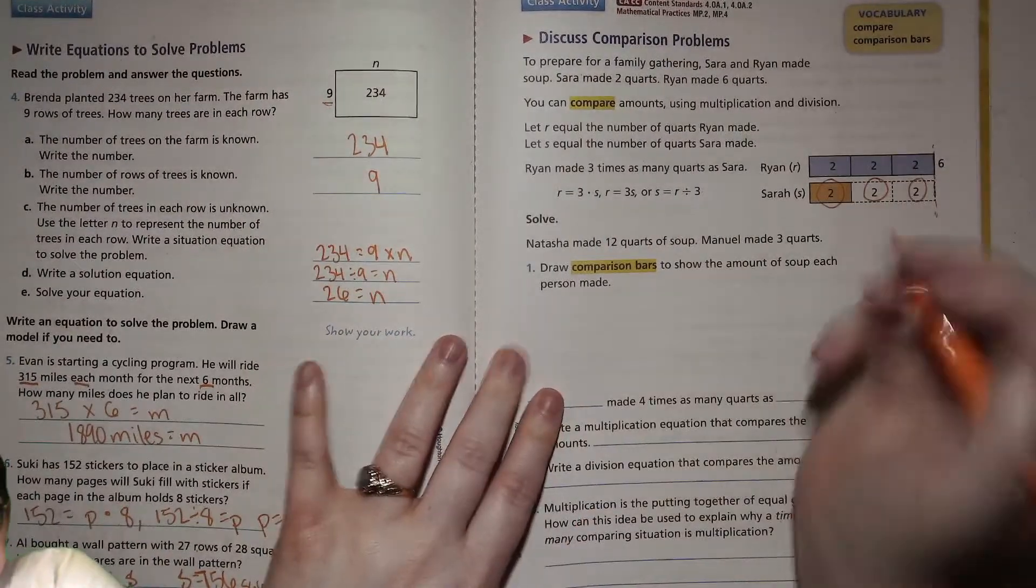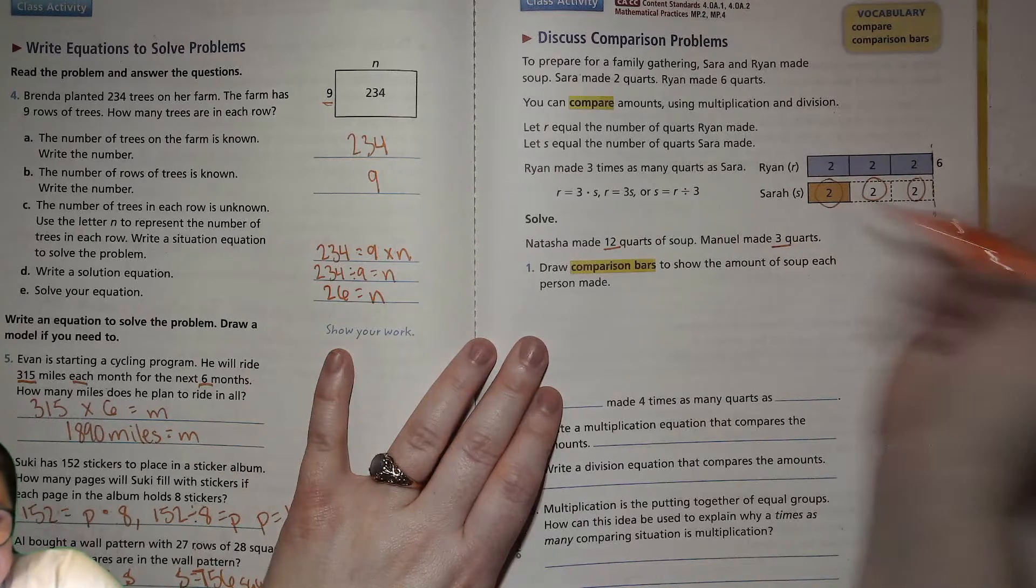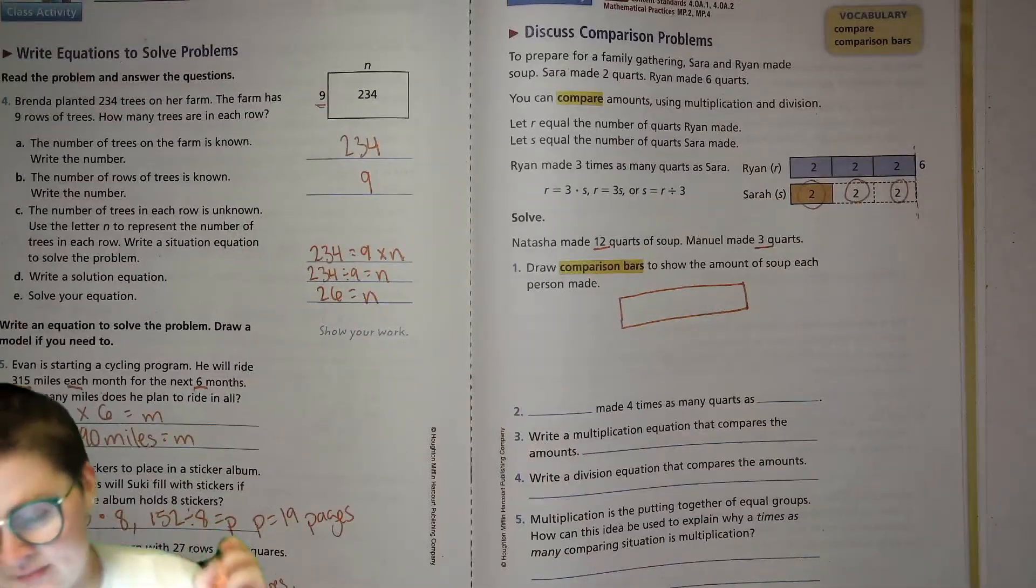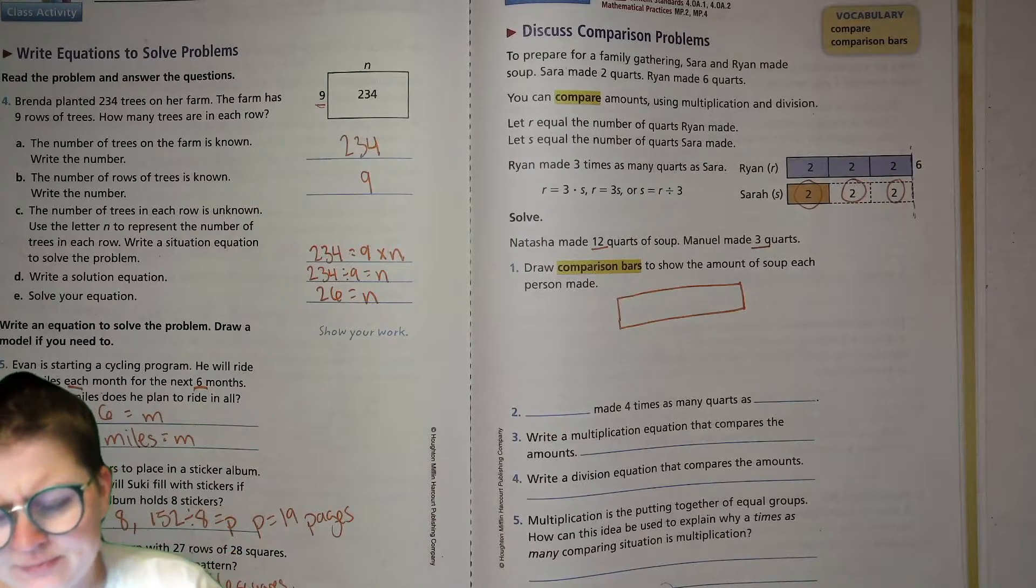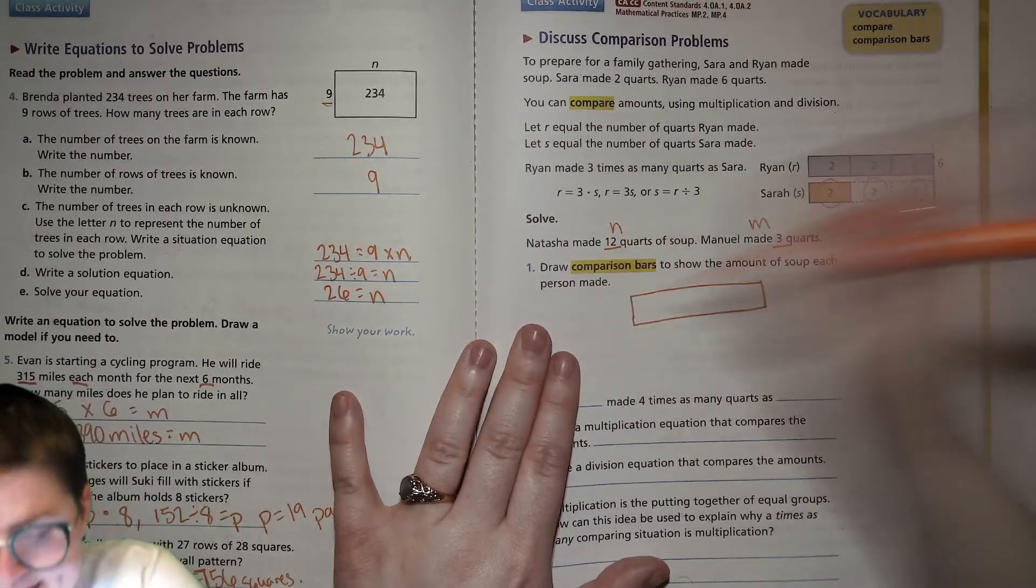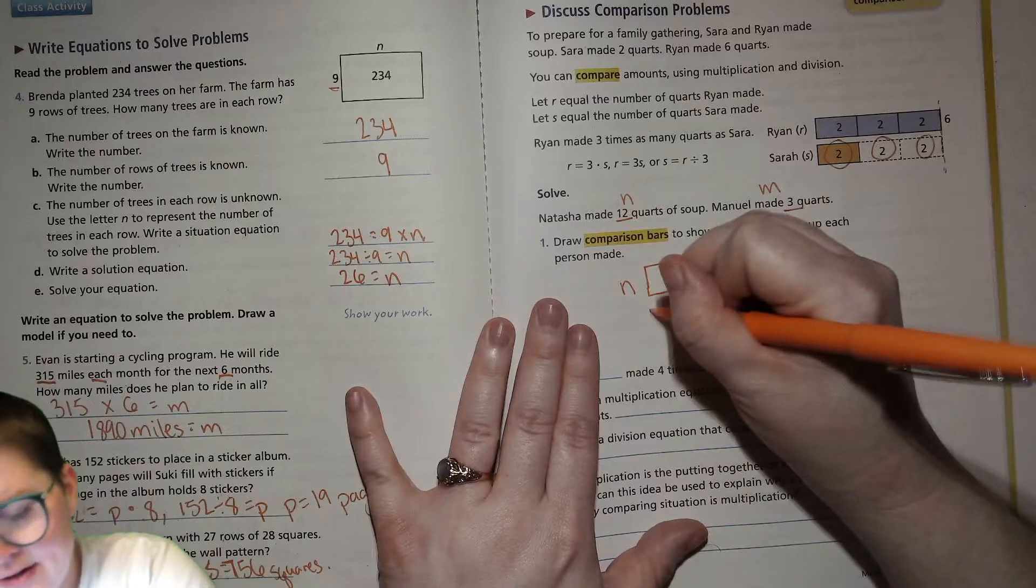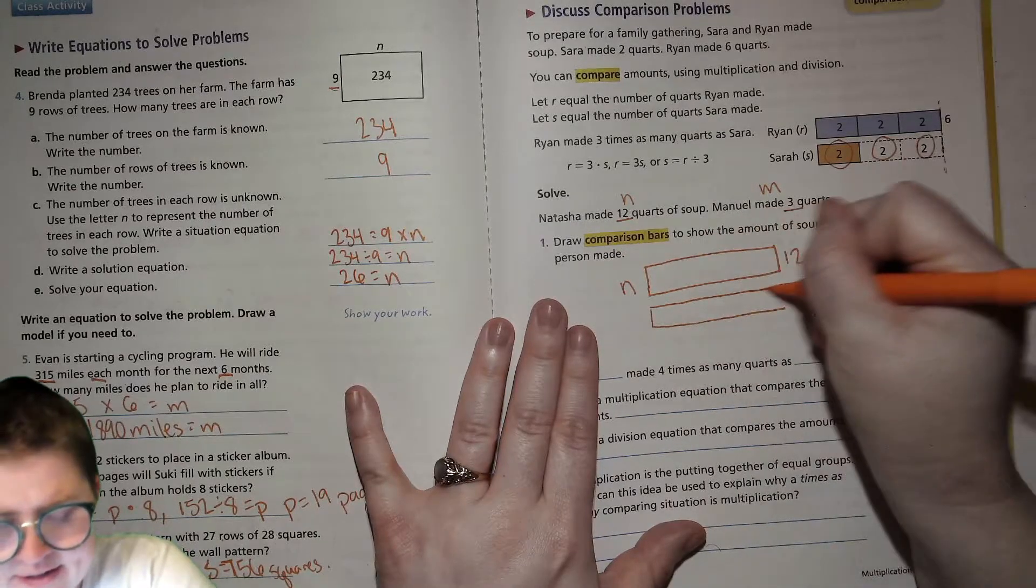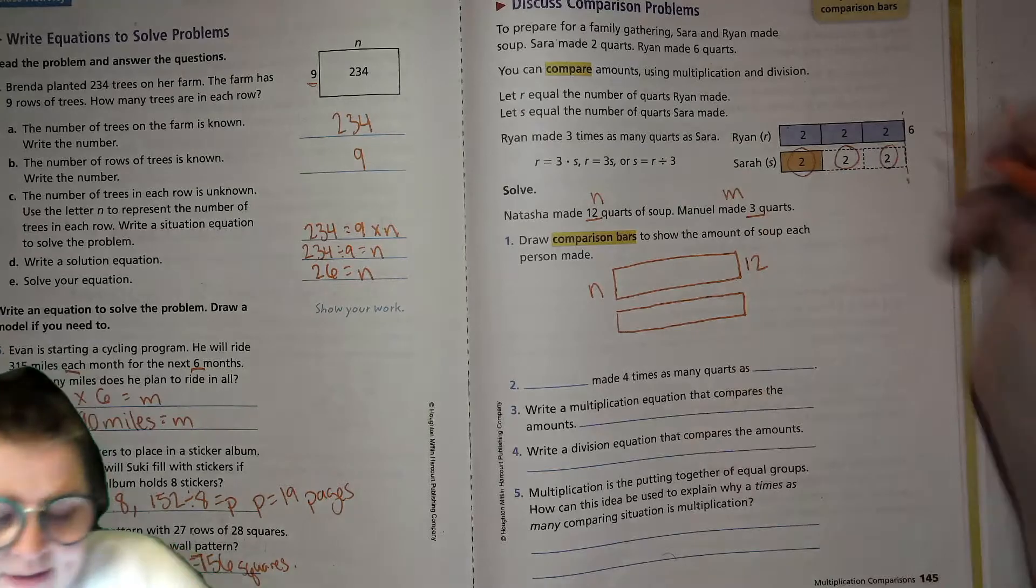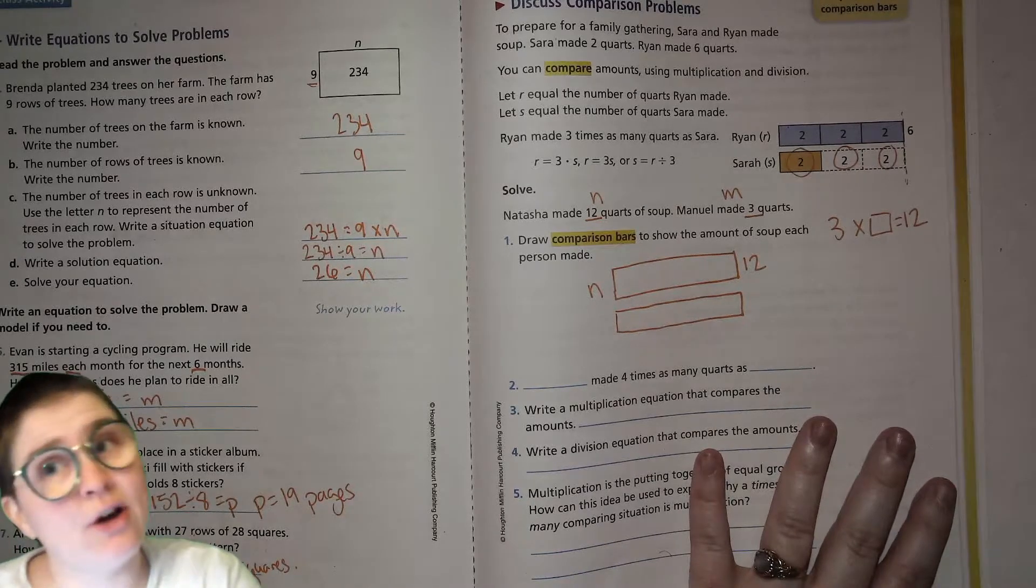Now we're going to try it ourselves. Ready? So Natasha made 12 quarts of soup. Manuel made three quarts. I'm going to draw comparison bars. One big bar. And then before I draw the little bar, I'm going to decide Natasha will be N. Manuel is going to be M. So N is going to be the big bar. She made more. And then I'm going to ask myself, how do you get, if we're looking for a multiple, what do you multiply three by to get 12?